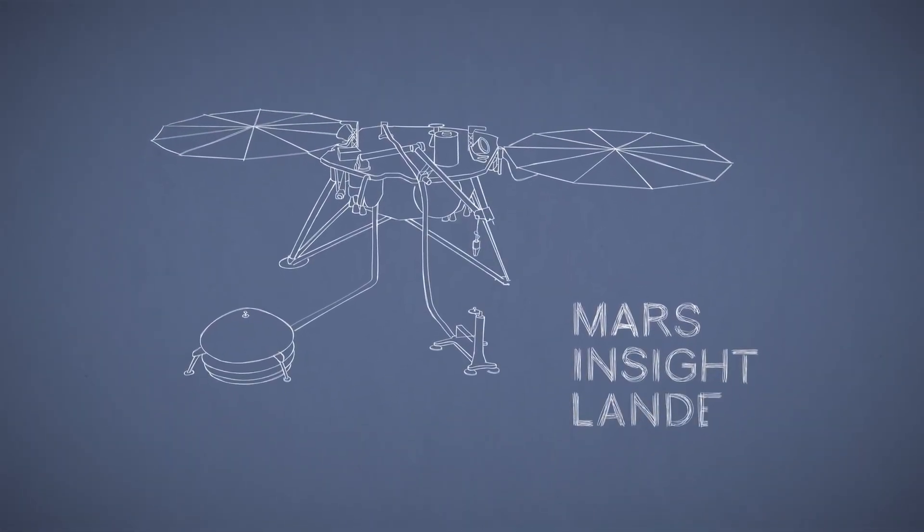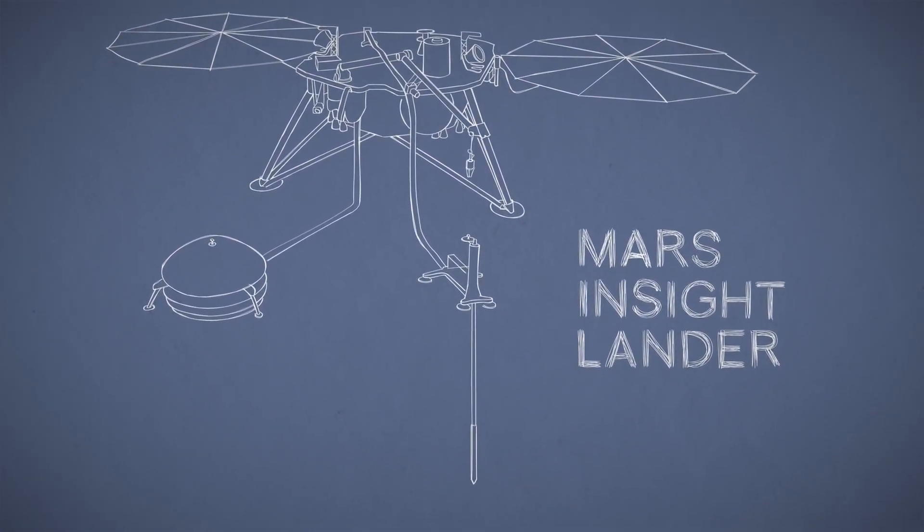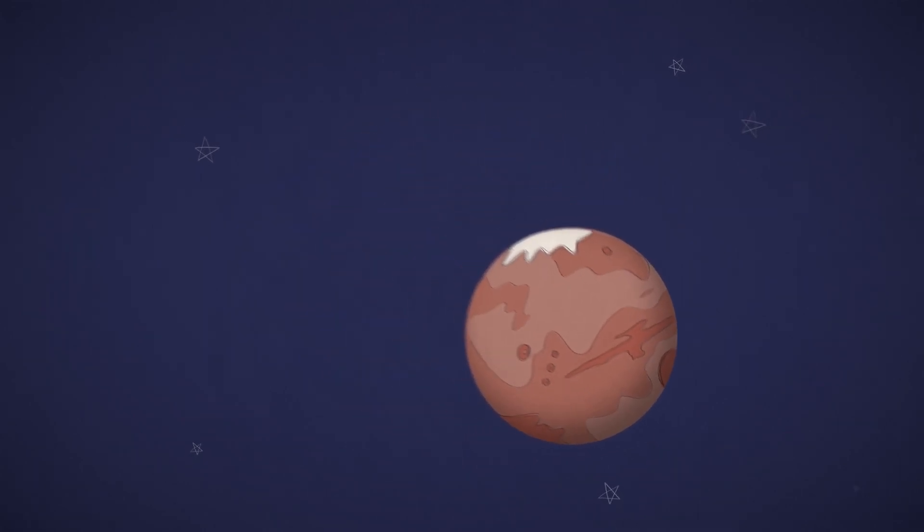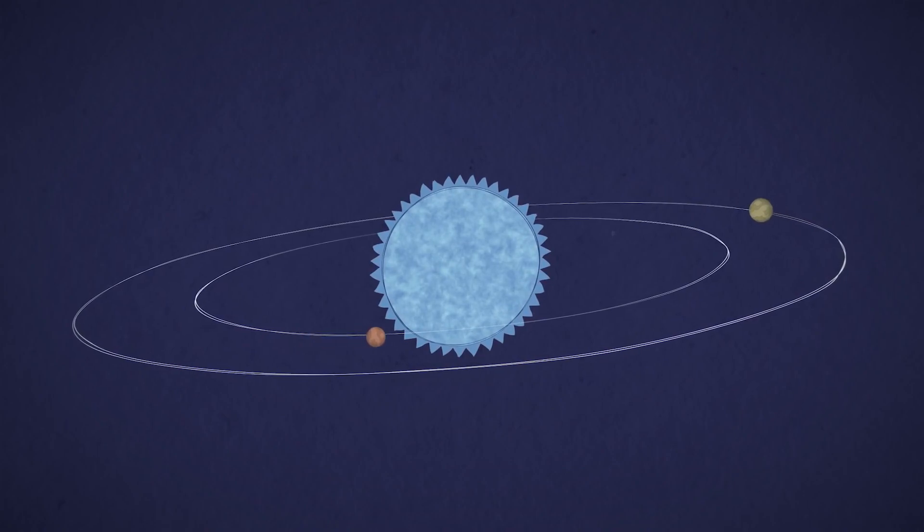NASA's InSight mission carries a special probe to burrow down and measure heat flow. That can teach us not just about how Mars works today, but how it and all rocky planets form, including Earth and even planets in other solar systems.